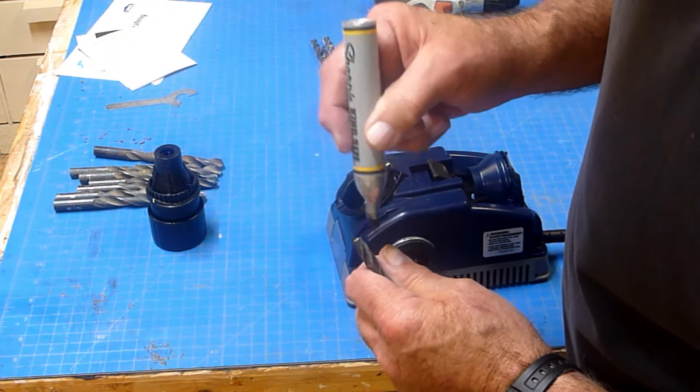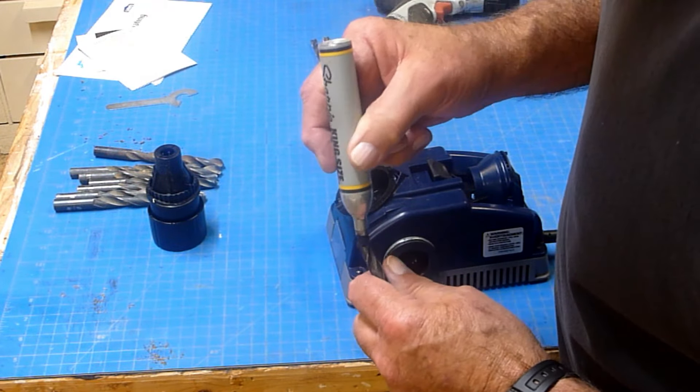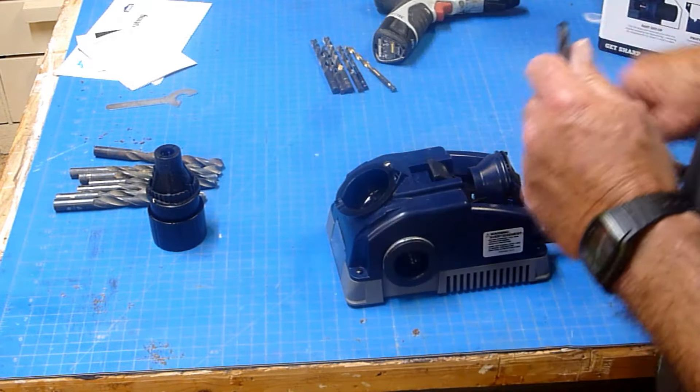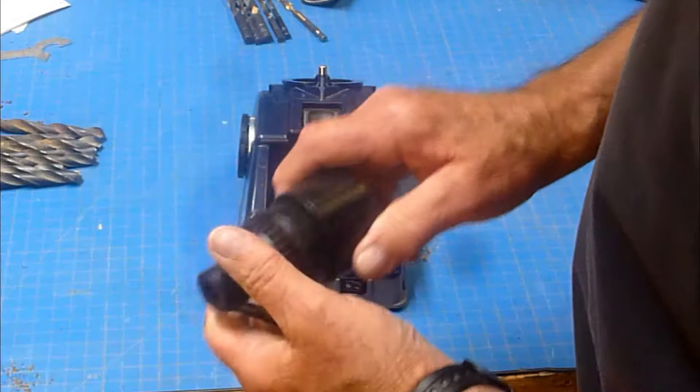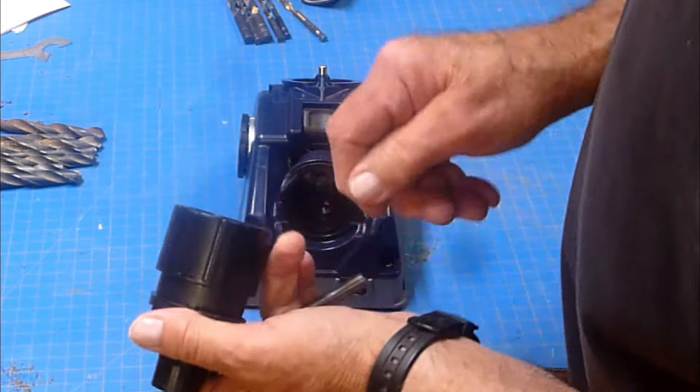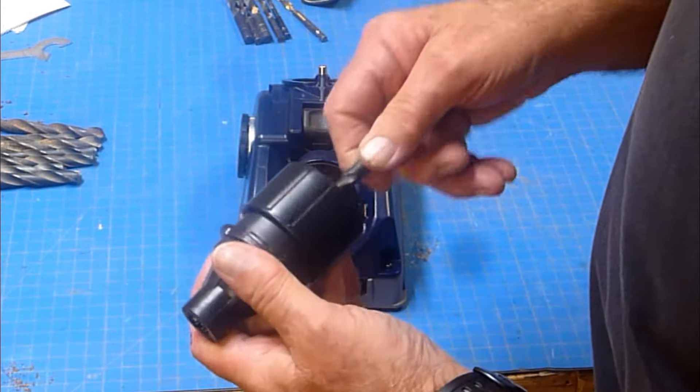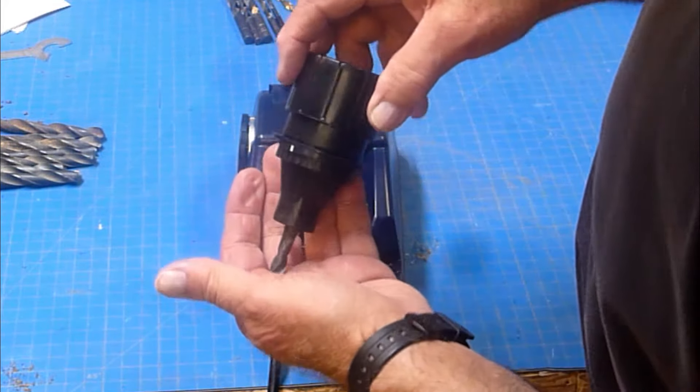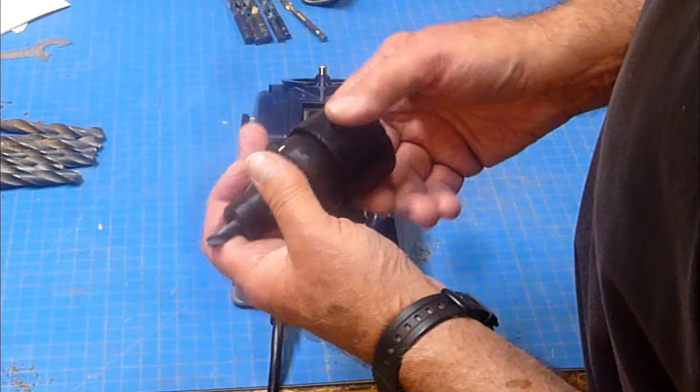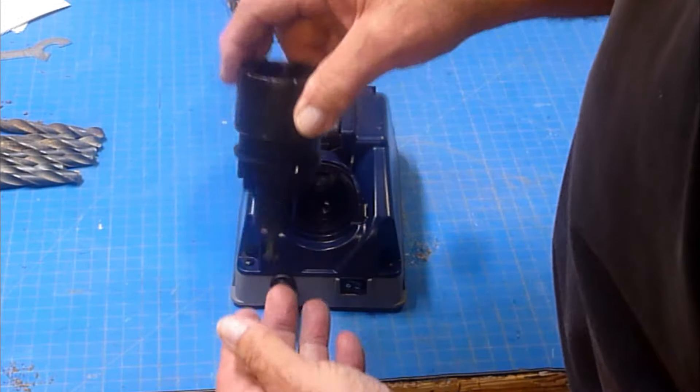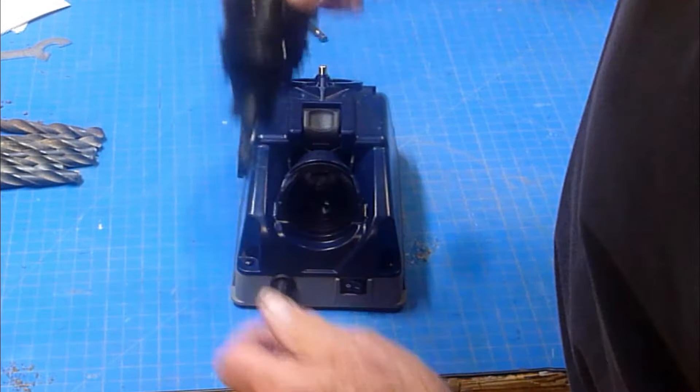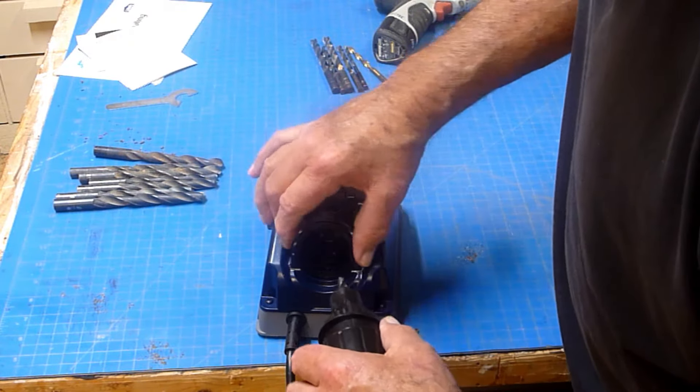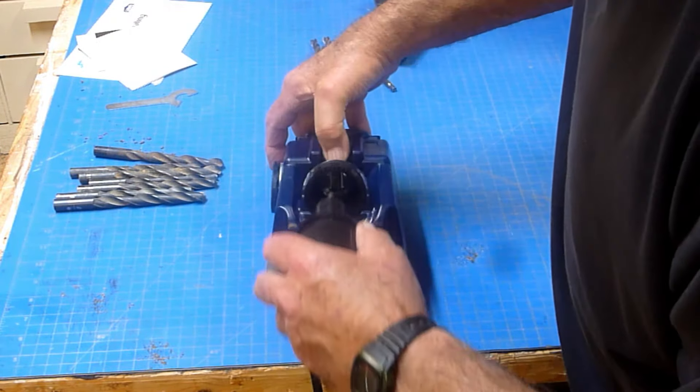Before I sharpen the bit, I'm using a permanent marker to black out the shiny metal on the end, and this will allow us to see how even the sharpening actually is. Now, I can insert the bit into the chuck, and of course, I will have to spin the chuck open or closed enough until it fits. You want it to be snug enough that the bit just won't fall out, and yet loose enough that you can still spin it inside the chuck, and also let the bit stick out about an inch from the end.